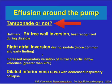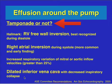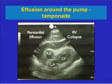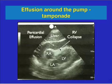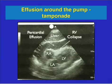Now, what's important to us is whether there is tamponade. The hallmarks of tamponade are: right ventricular free wall inversion, best recognized during diastole; right atrial inversion during systole, which is a more common and early finding; increased respiratory variation of the mitral or aortic inflow velocities, though in the ICU we don't usually calculate those; and a dilated inferior vena cava with decreased inspiratory collapse, though that's not always found. Here in a subcostal view, you can see the pericardial effusion — and even though the right atrium is still open, the right ventricle is collapsed, indicating a high-pressure effusion or one that has accumulated more recently.